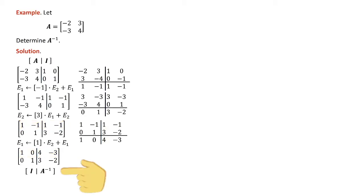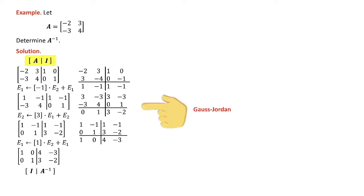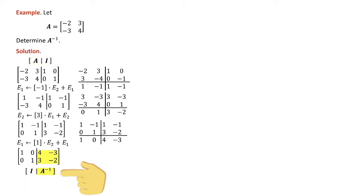And that's it. Look what we have: we have the identity matrix on the left, and on the right we have the inverse. We started with A augmented by the identity matrix, we did Gauss-Jordan, and now we have the identity matrix augmented with the inverse.